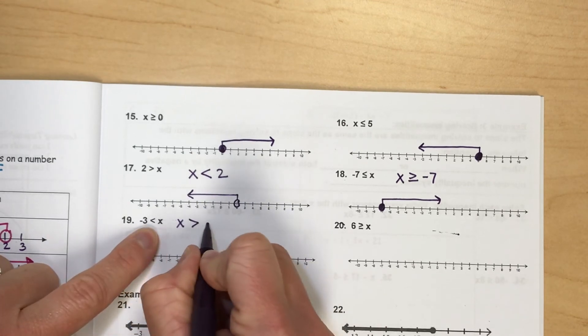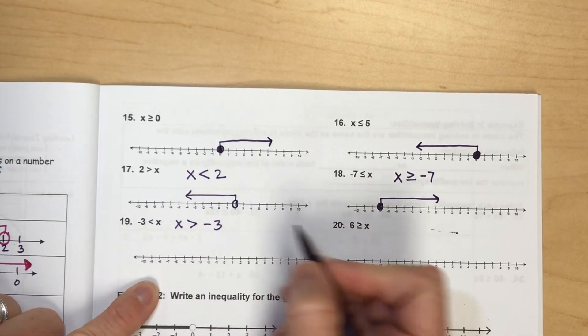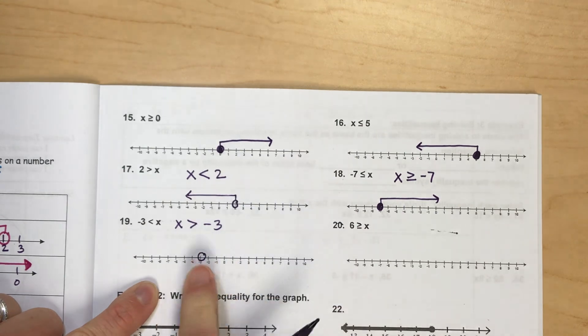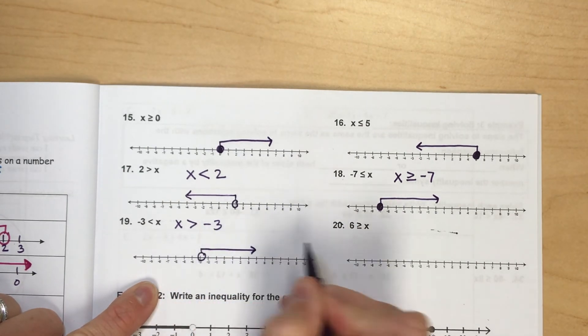Again, this one needs to be flipped around. So x is greater than negative 3. I'm going to circle it and leave it open, and then shade to the right.